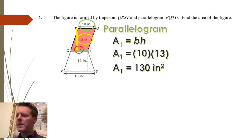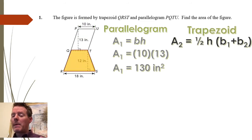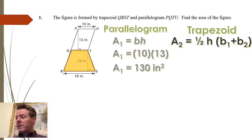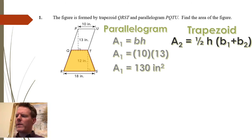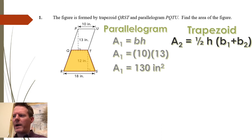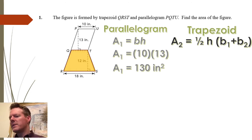The trapezoid — remember the area formula for a trapezoid is one half times height times base one plus base two. I'm using subscripts to organize my work and differentiate which work goes with which shape. So my parallelogram is area subscript one and my trapezoid is area subscript two.